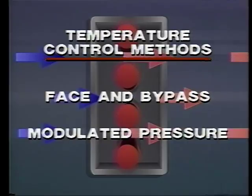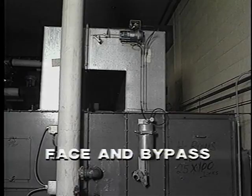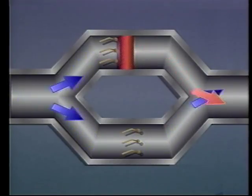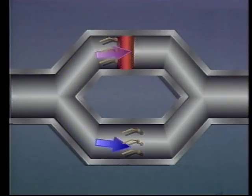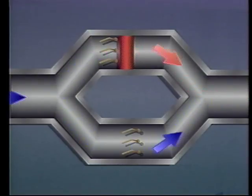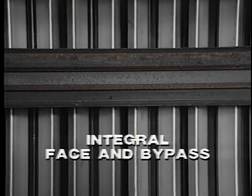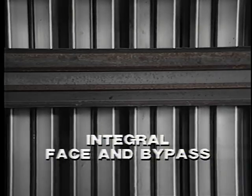Historically, there have been two methods of controlling the leaving air temperature. One method, called a face and bypass system, uses a series of remotely controlled dampers to mix heated and unheated air, creating the desired temperature. This is accomplished either by using separate ducts with dampers for heated and unheated air, or by using dampers to channel air across or around the heat exchange surfaces of the coil.